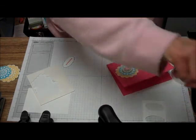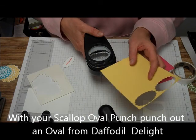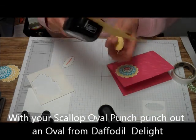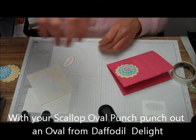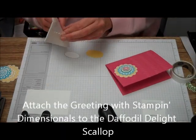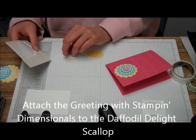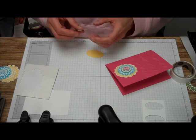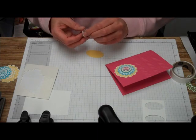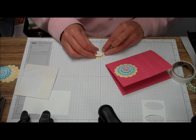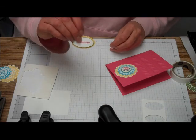Then we're going to take our scalloped oval punch and punch out the scalloped oval. Two Stamping Dimensionals on the back with the saying. You can probably use almost any saying in the Teeny Tiny Wishes. I just like Thinking of You as it's a good general saying.